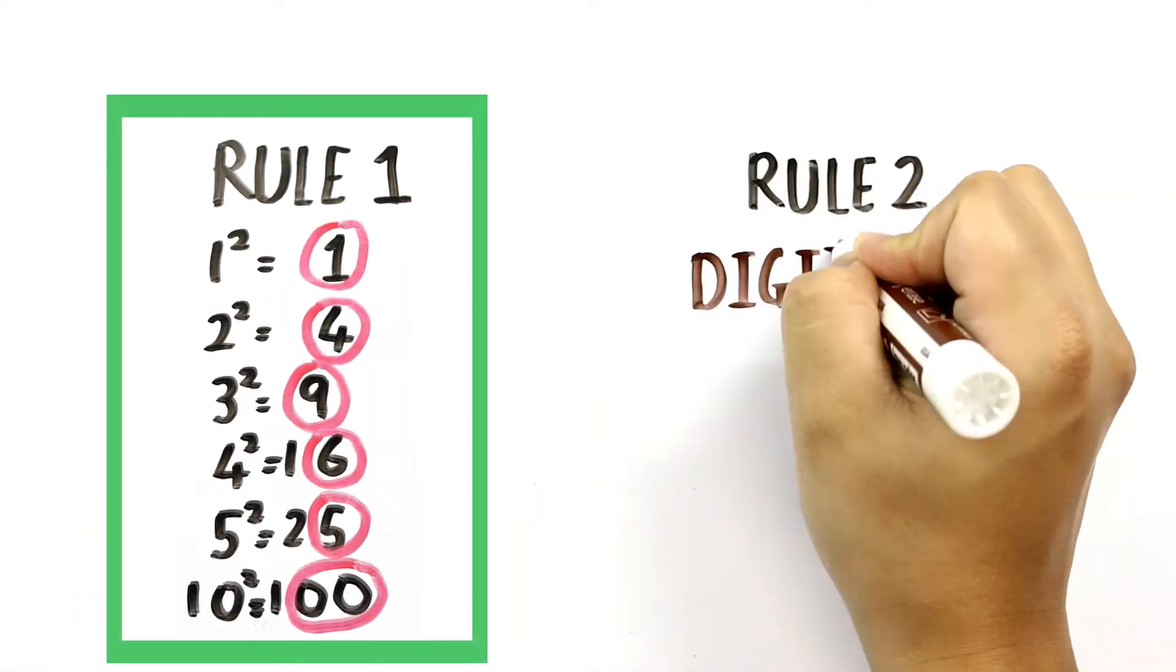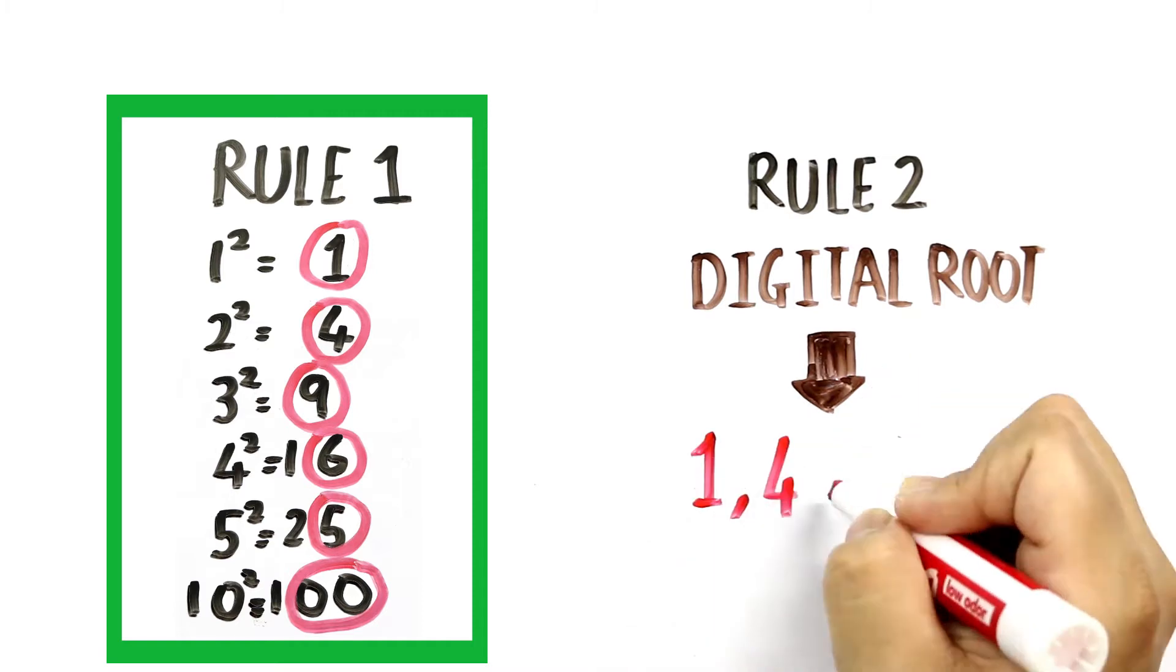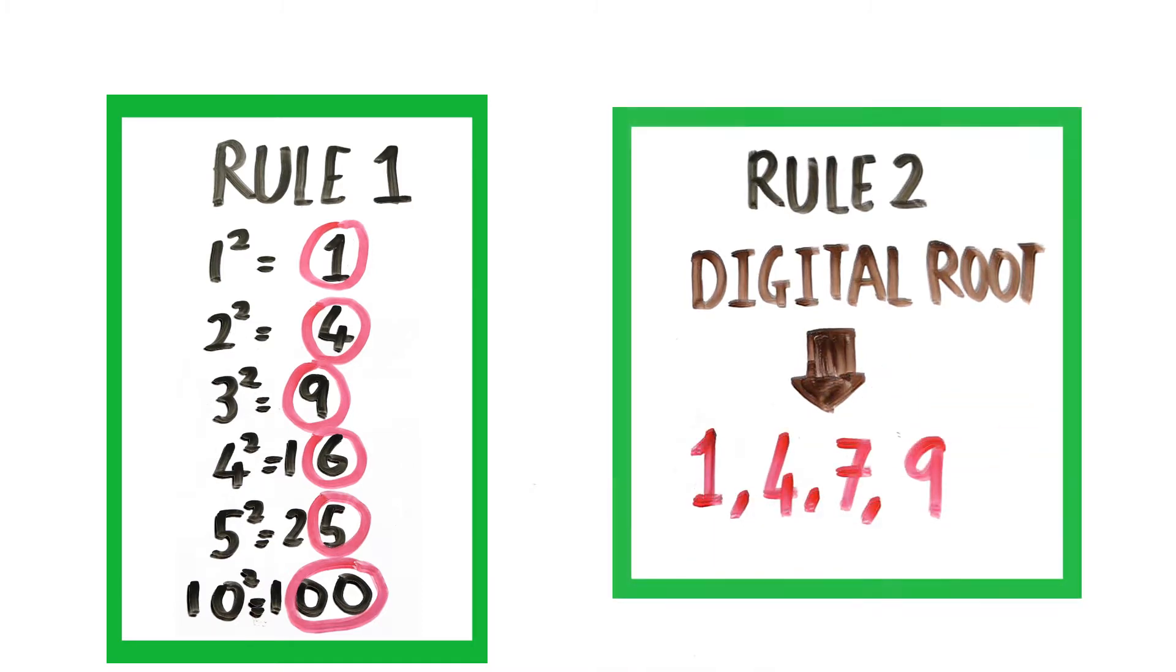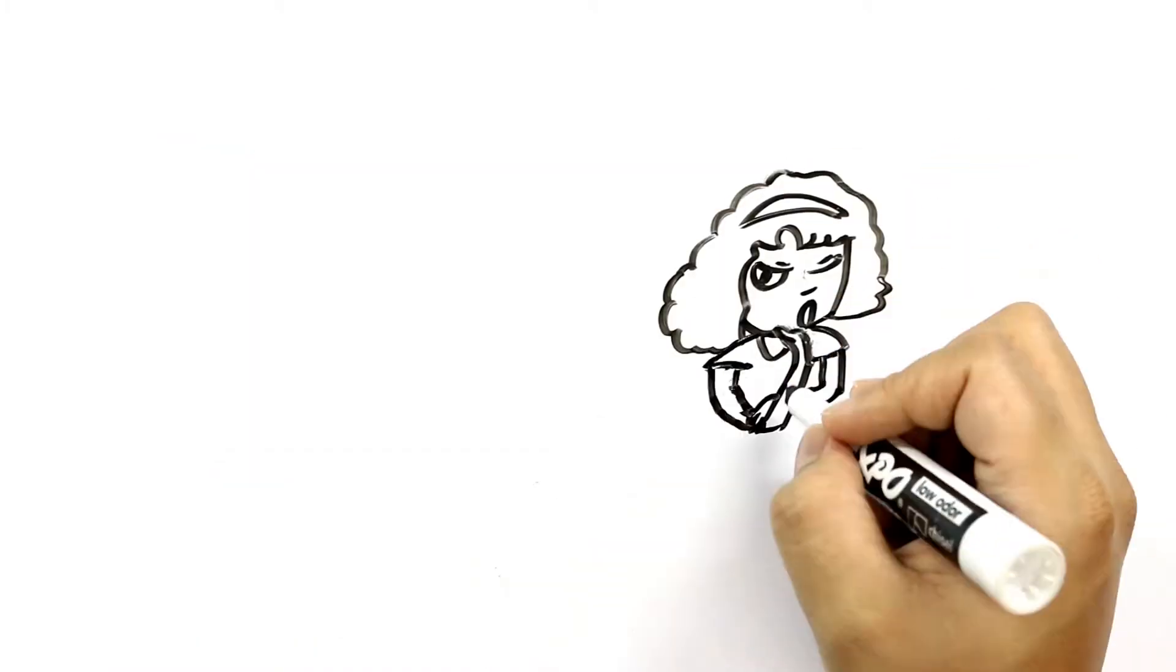Also, the digital roots of a perfect square will be 1, 4, 7, and 9. Now, what does digital roots mean? Let's understand it with an example.